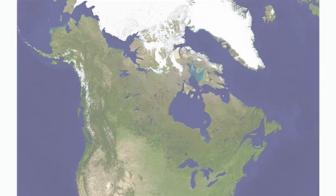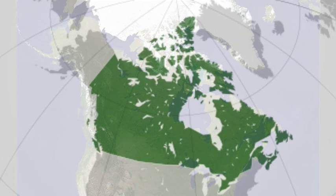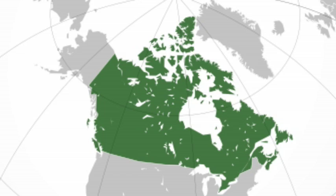With all of its lakes and islands, Canada has the most coastline of any country on earth. It also has the longest border with another country — the border between the United States and Canada is the longest land border in the world. About 80% of Canadians live close to this border and in cities.